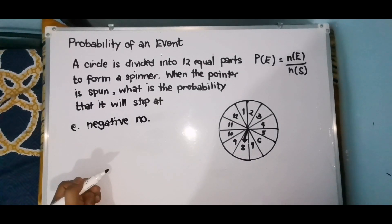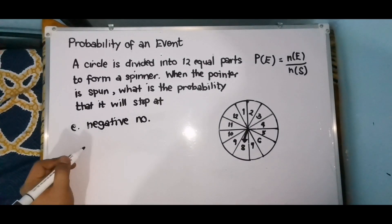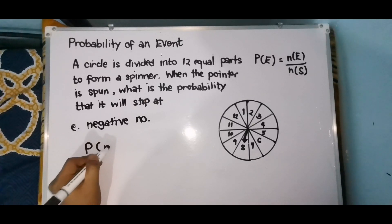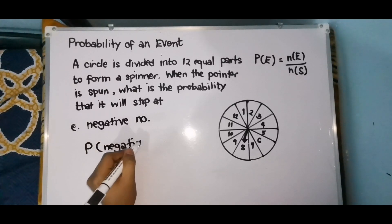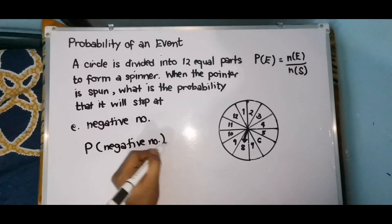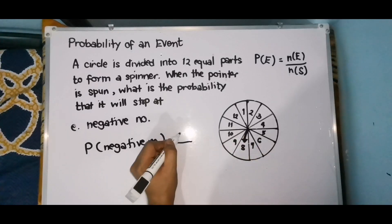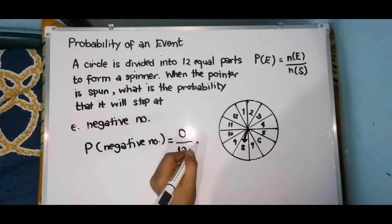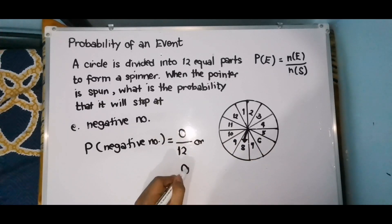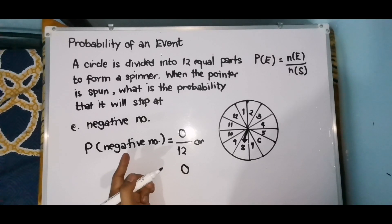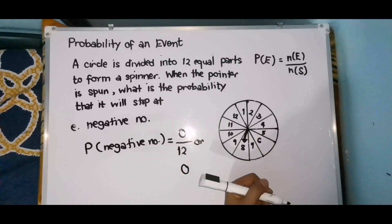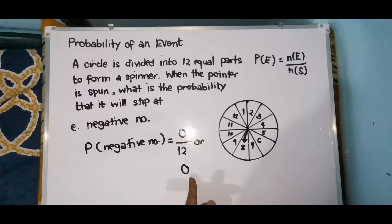Letter E: what is the probability of getting a negative number? So probability of getting a negative number — there's none. Wala naman tayo ditong negative number. So 0 over 12, or 0 — that is 0%. Meaning to say that it is impossible na kapag in-spin mo yung spinner, you will get a negative number. Wala ka talagang chance na makakuha ng negative number. So the answer is 0.